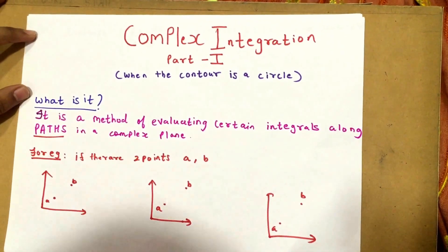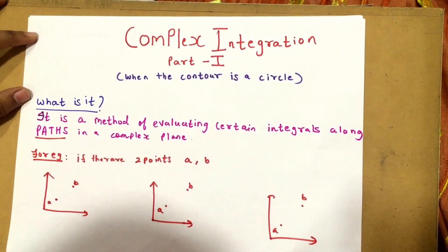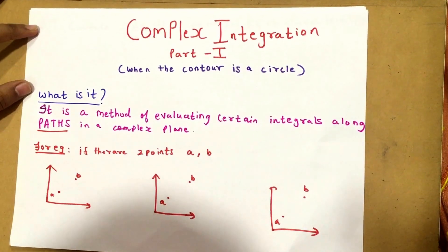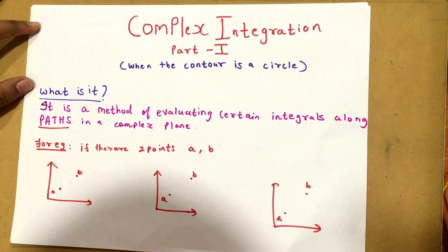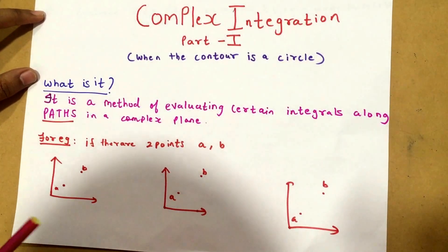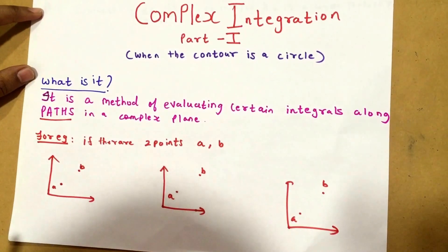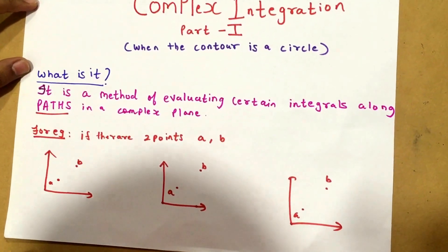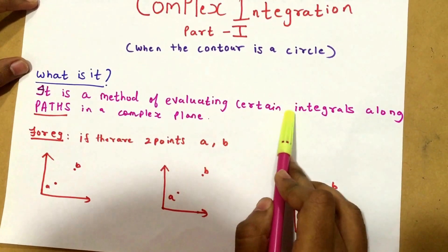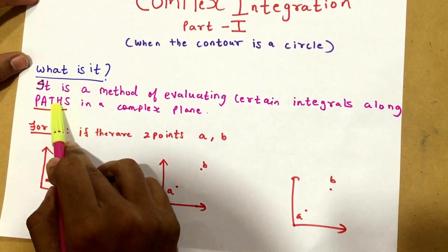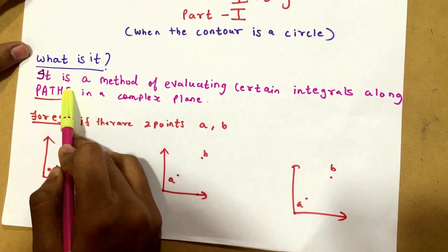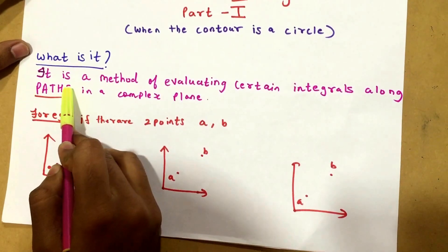Hi guys, today we're going to do a new video in our math series and today we're going to learn complex integration, particularly part 1, that is when the contour is a circle. So first off, what is complex integration? It is a method of evaluating certain integrals along paths in a complex plane. I've mentioned the word 'paths' — now what does this mean?